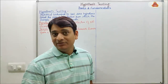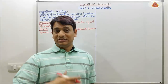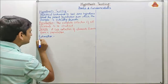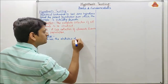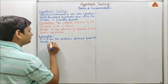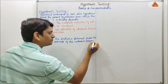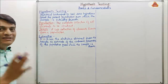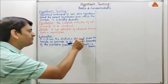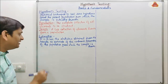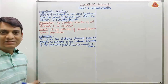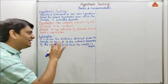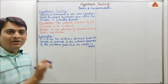So sample will always be representative data for the population. Now coming to another term used in hypothesis testing: estimation. Estimation is to use the statistics obtained from the sample as an estimate of the unknown parameter of the population from which the sample is drawn. The sample will be drawn from the population and used to estimate the unknown parameter of that population, and the sample will be representative of that population.